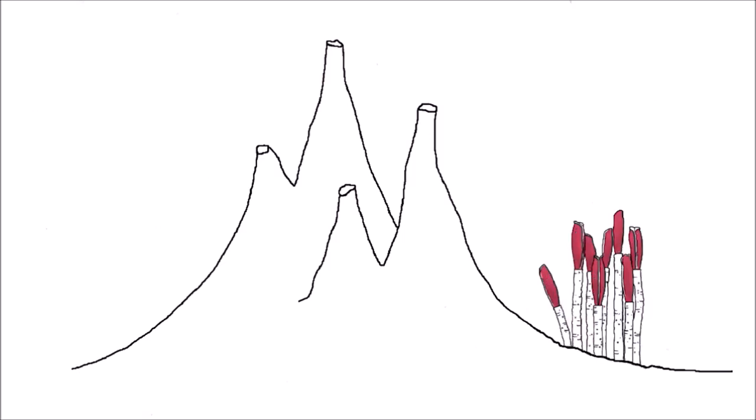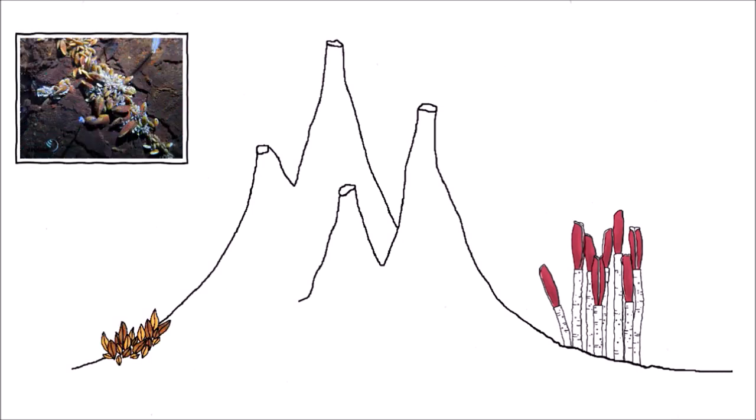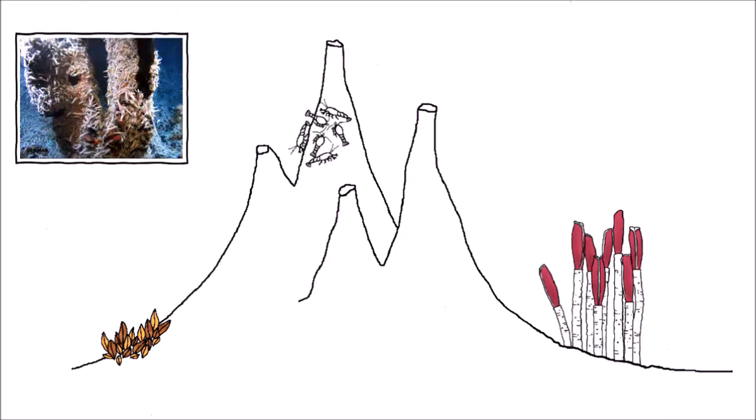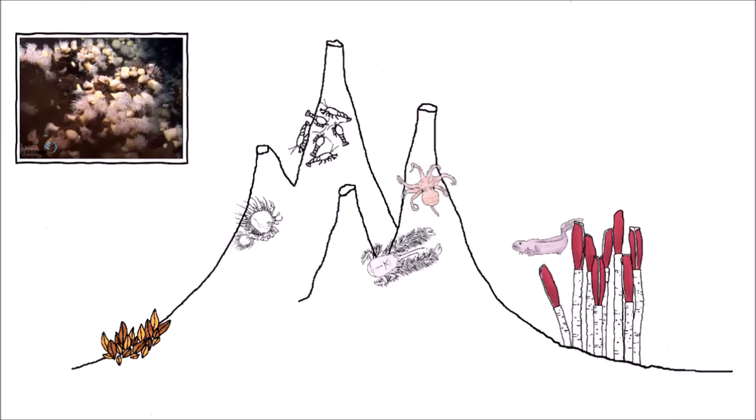You can find those giant tube worms. They can be taller than an adult human. There are fields of deep sea horse mussels, thousands of white shrimp. They don't have eyes, I mean, sure, why would you need eyes if it's constantly dark, right? You'll see deep sea crabs called yeti crabs, because they look so fluffy. There are anemones, you might even encounter an octopus or a fish.